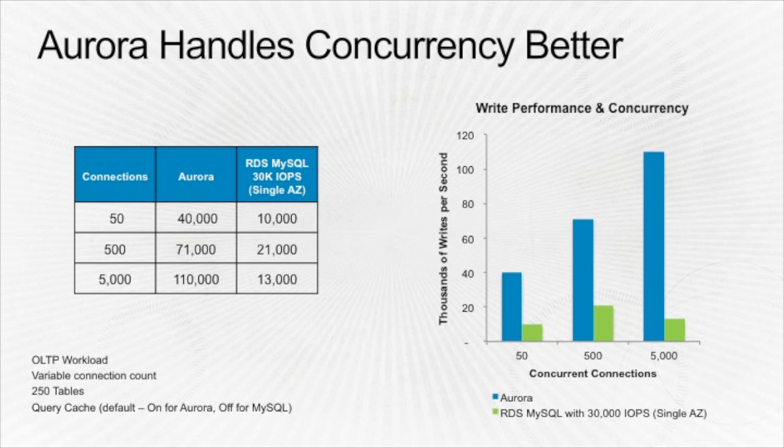On concurrency, you can see that Aurora scales with the number of connections as they go up, whereas with RDS, around 500 connections is the sweet spot and performance begins to tail off after that. Concurrency is really strong on the Aurora side.